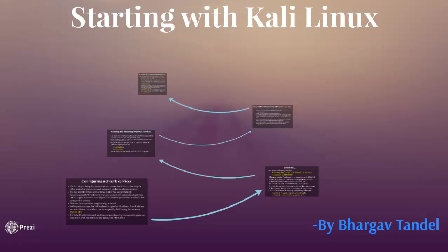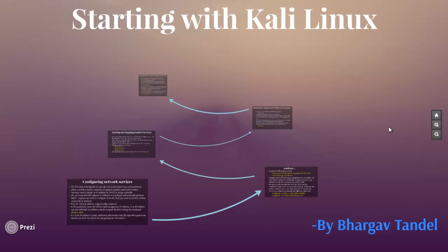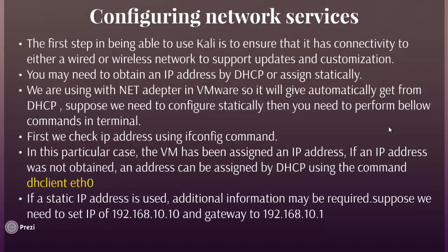We are starting with configuring network services. The first step to being able to use Kali is to ensure it has connectivity to either a wireless or wired network to support updates and customization. You may need to obtain an IP address by DHCP or assign it statically. We are using a network adapter in VMware, so it will automatically get an address from DHCP.